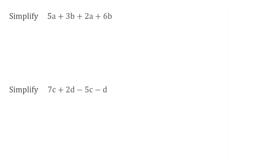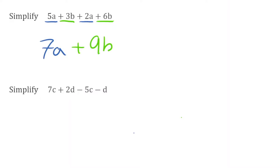Let's start with the a's. We have 5a plus 2a. If we do that, 5a add another 2 lots of a, we should have 7a. Then we're going to look at our terms of b. We have positive 3b, positive 6b. So we've got 3b plus another 6b, that would give us 9 lots of b. So at the end we'd have plus 9b, giving us 7a plus 9b.